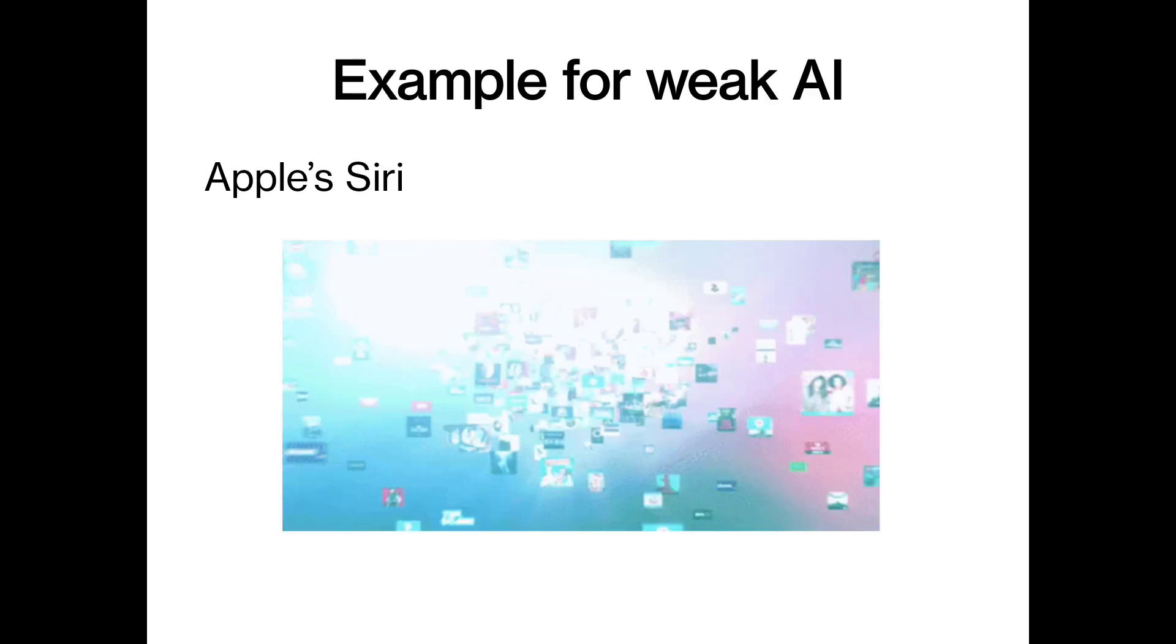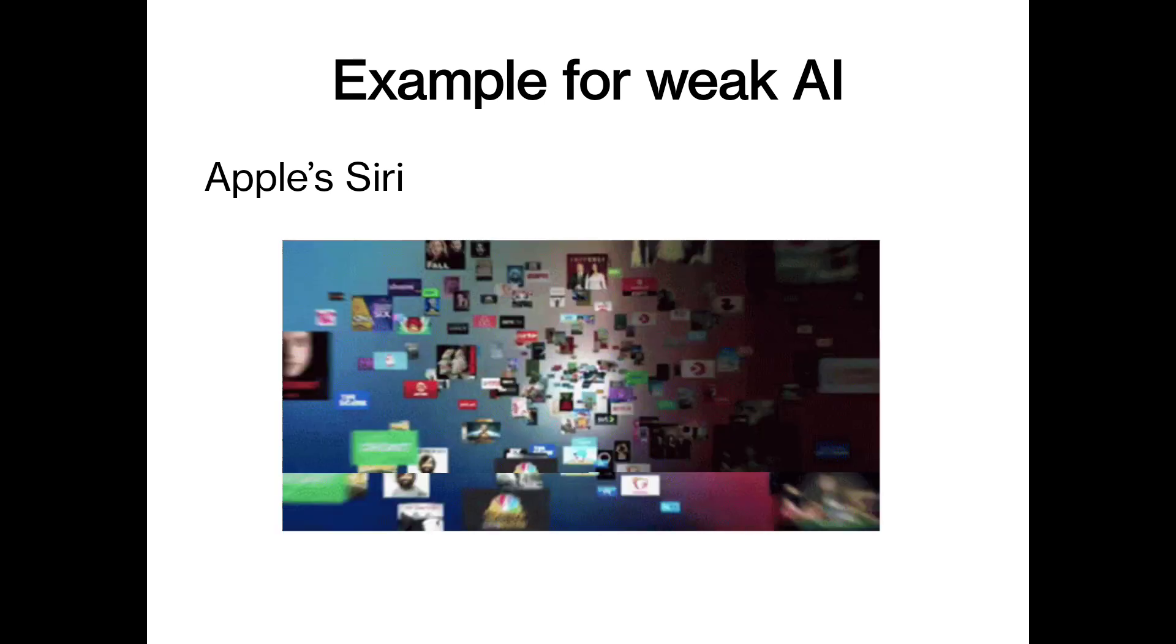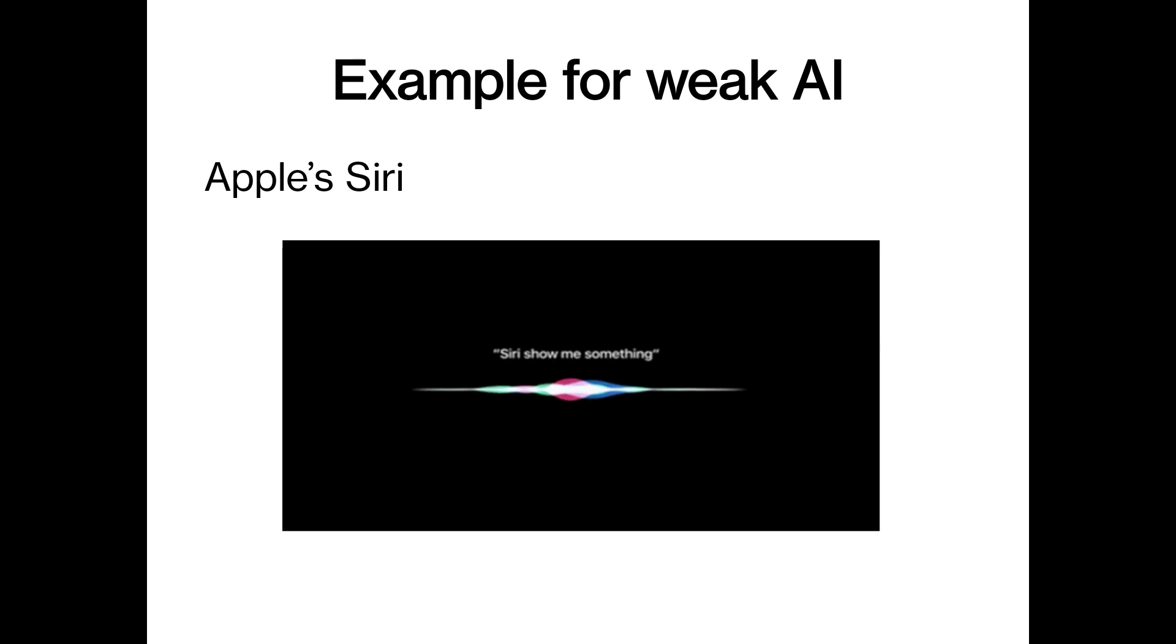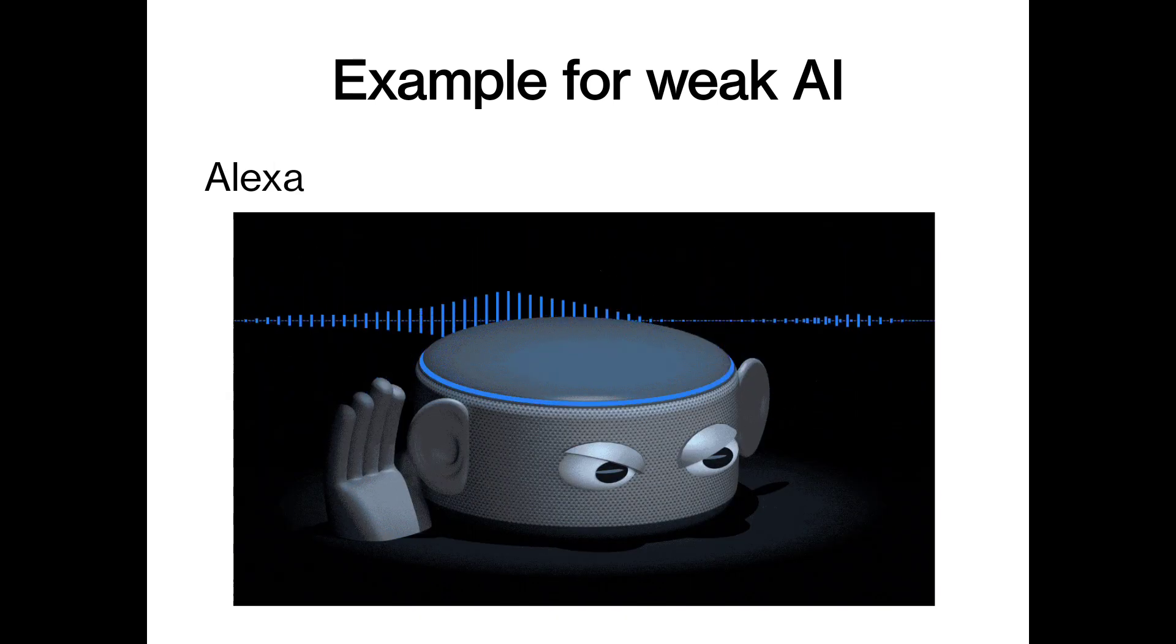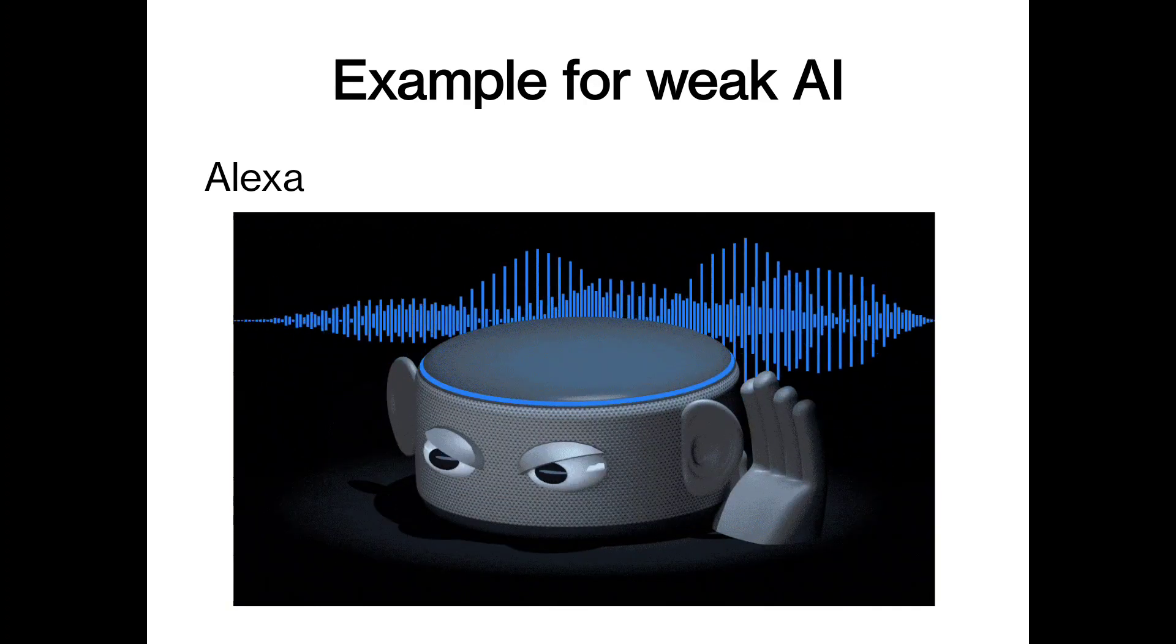The first example is Apple Siri. We all know it's a voice recognition. By speaking voice, it will reply for the answer. It is operated within a limited period or predefined range of function. The next example is Alexa. It is also one of the voice recognition apps. It is also operated with a limited predefined range of function.